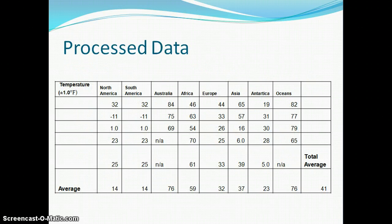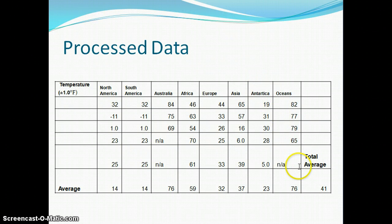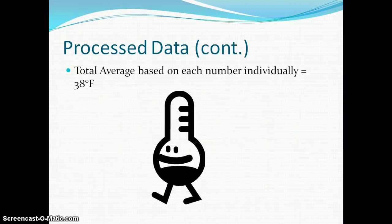This is our processed data where we took all of our raw data for the different continents and averaged them. Down in the bottom right corner, we have the total average, which averaged the averages of each continent, and we ended up with 41 degrees Fahrenheit as an average for the world temperature. We also took all of the temperatures and averaged them out, which gave us 38 degrees Fahrenheit — just averaging all data points collected — and found it was a little different but still close.